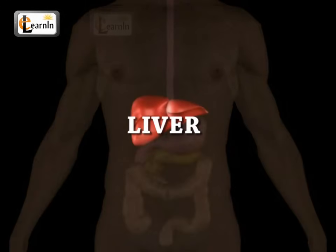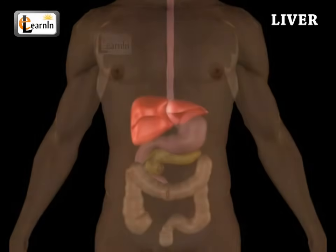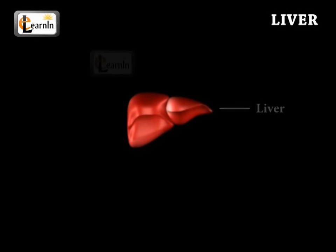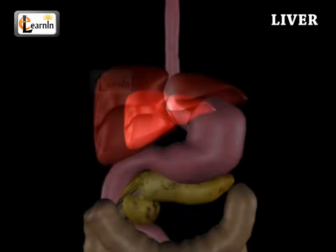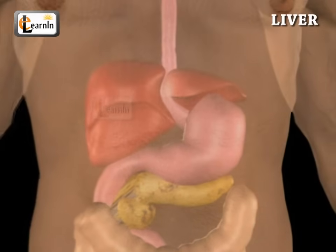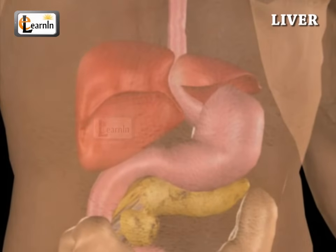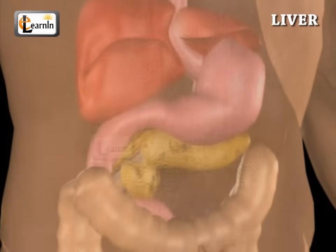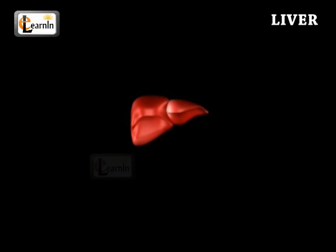Human anatomy: the liver. This video illustrates one of the most used internal parts of the human body — the liver. One can understand how the liver functions and aids the digestion of food in humans, apart from it producing vital nutrients and helping in the excretion of waste material from the body.